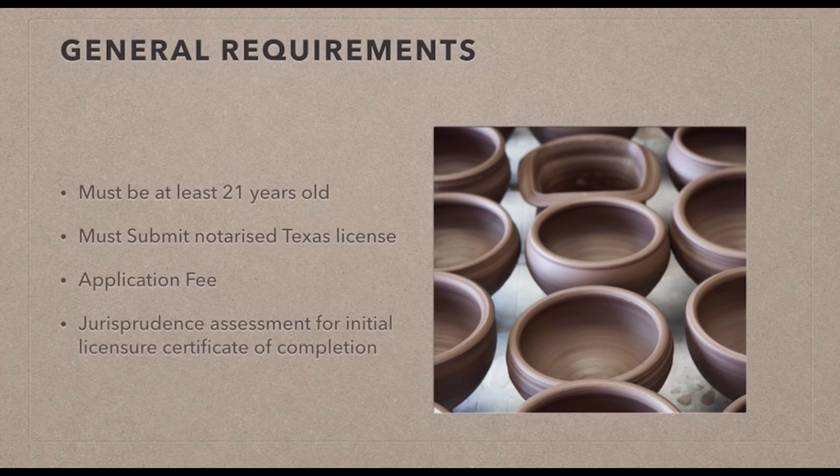Another requirement is the jurisprudence assessment for initial licensure — a completion certificate is needed. This jurisprudence assessment happens for most states in the US. You need to fill up the form, and it is mostly an open book exam, so you can easily get through it. It's not a major issue.